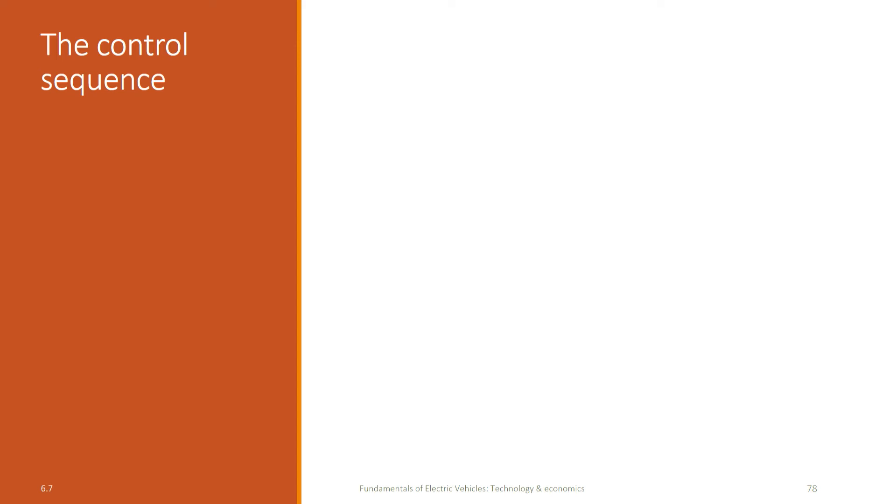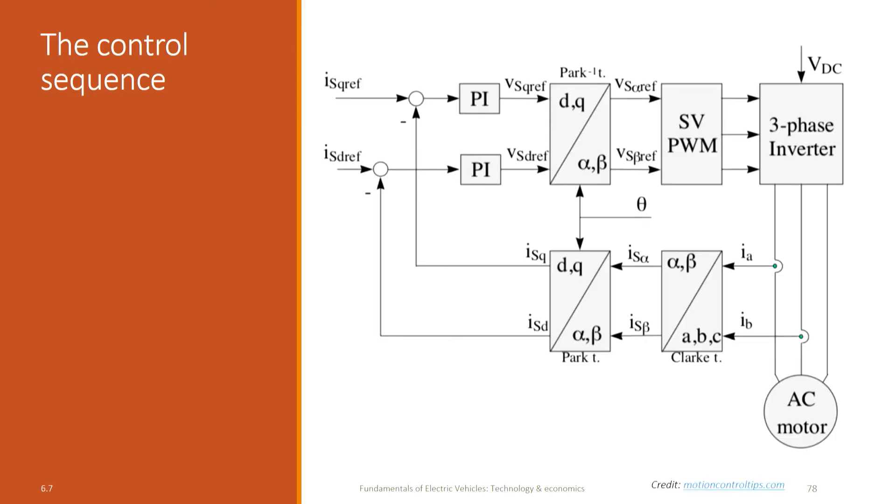So having understood this we can now understand how the whole control sequence works in the controller. Essentially the first thing that we do is I want the motor to deliver a certain torque, which means it must take a certain current, and it must be running at a certain speed, which means a certain pair of VD and VQ voltages have to be applied. This is what the controller decides. The definition of VD and VQ that comes from the control algorithm gets translated into I alpha and I beta, which is what you are seeing here. The VD ref and VQ ref both of which come from the stator voltage - the stator voltage is resolved into VQ and VSD. The reference values are then converted from the DQ reference frame to the alpha beta reference frame, and this is the Park inverse transform.